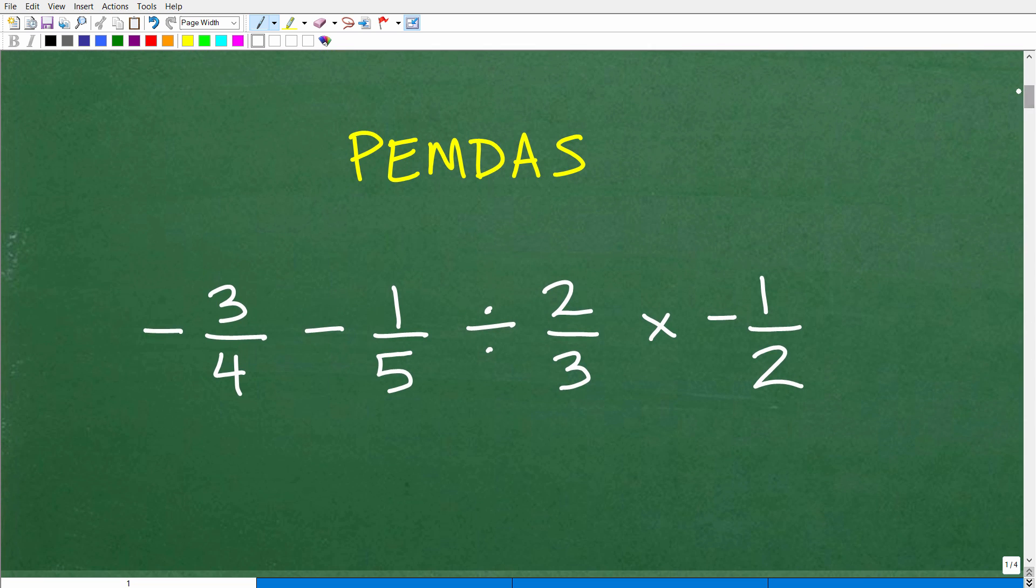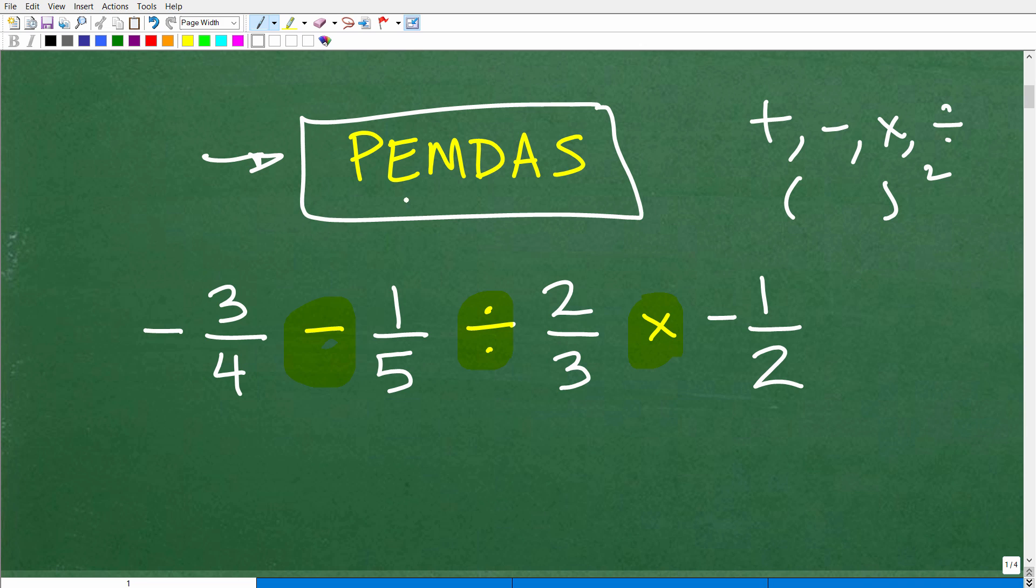Now, before we start the problem, I'm going to give you a bit of a hint because I want you to be successful. So here is the problem. What we have is various mathematical operations going on here. We have division, we have multiplication, and then we have subtraction. Anytime you have a math problem, whether it's fractions or just numbers, decimals, and you're dealing with addition, subtraction, multiplication, and division, some sort of combination of all this stuff, or parentheses and powers, you need to be thinking about your good old friend PEMDAS. Hopefully you remember this, because this is the order of operations.